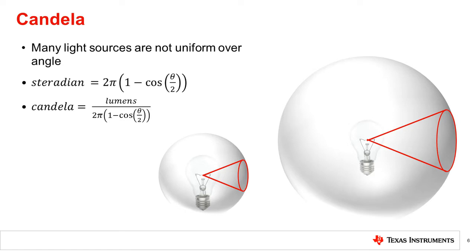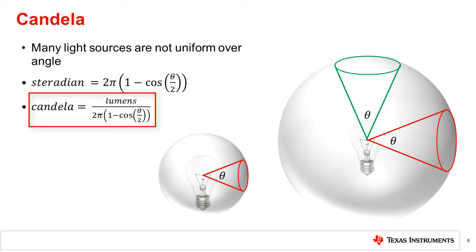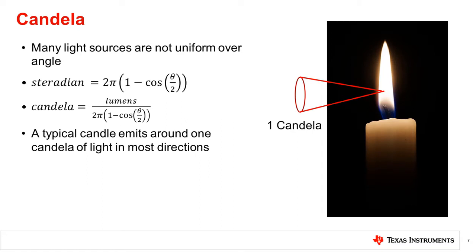Common light sources, including light bulbs, do not emit light uniformly in all directions. Consider a cone placed inside the sphere with an angle theta as shown. The lumens inside the cone would be unchanged with the size of the sphere. However, due to the non-uniformity of the light source, when the same quantity is measured from different directions, it will vary. The solid angle subtended by the cone is measured in steradians and is related to the angle theta by the formula shown. Candela is a measurement defined as the amount of lumens contained per unit steradian. The candela is particularly useful in characterizing directional properties of light sources. The candela was originally based on the light emitted by a candle, and a typical candle still emits roughly one candela of light in most directions.